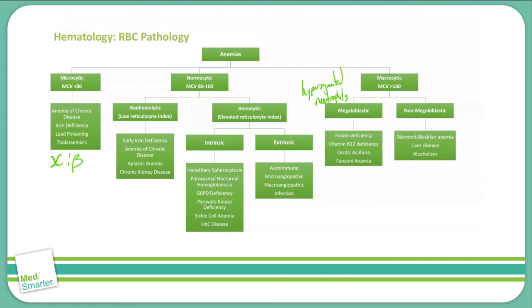Megaloblastic is caused by folate deficiency, vitamin B12 deficiency, orotic aciduria, and Fanconi's anemia.